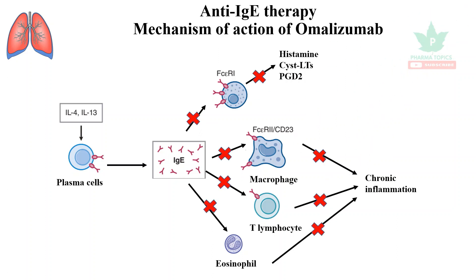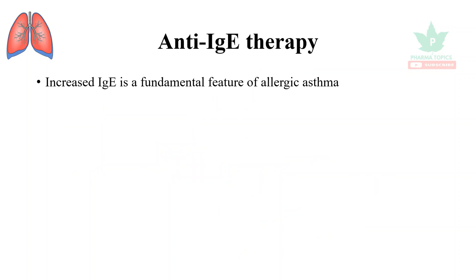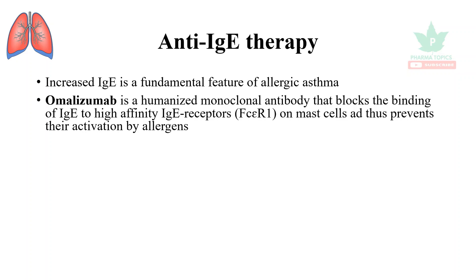All these together lead to chronic inflammation of the respiratory tract, resulting in bronchoconstriction. All these sites are blocked by anti-IgE therapy with omalizumab, blocking the stimulation of mast cells, macrophages, T lymphocytes, and eosinophils. Increased IgE is a fundamental feature of allergic asthma.